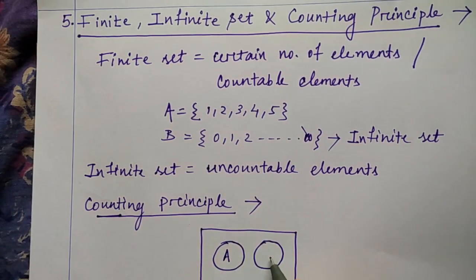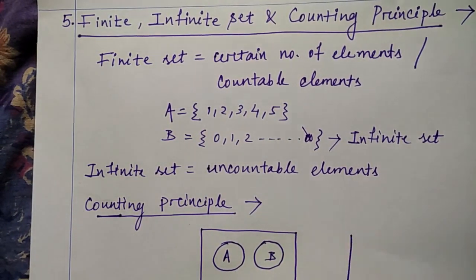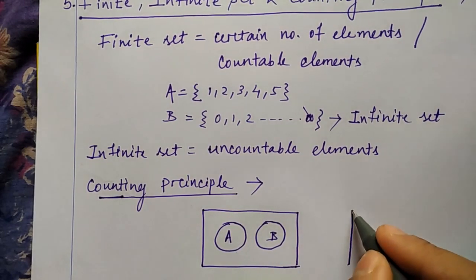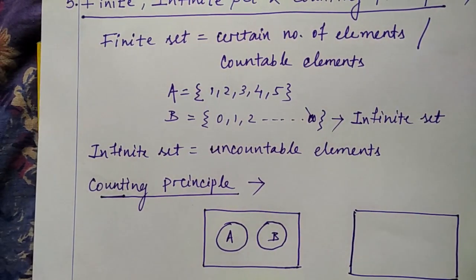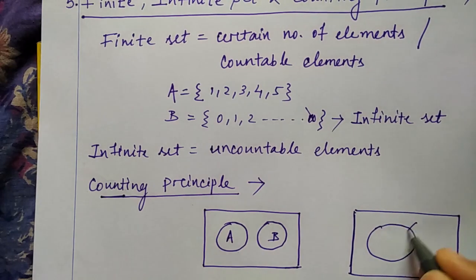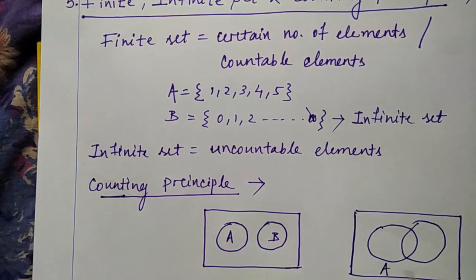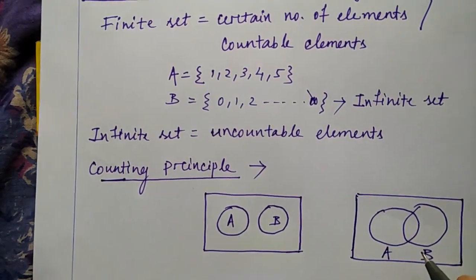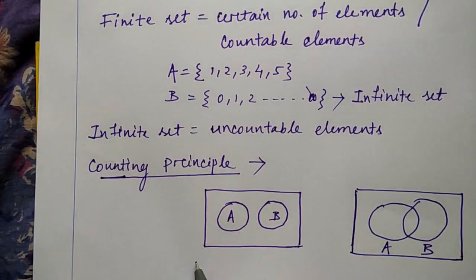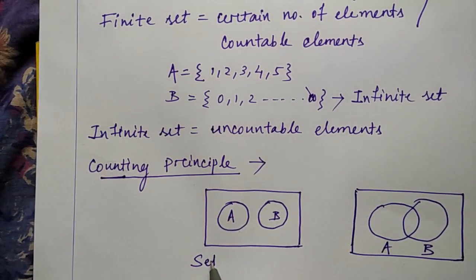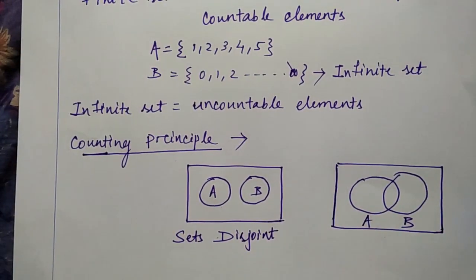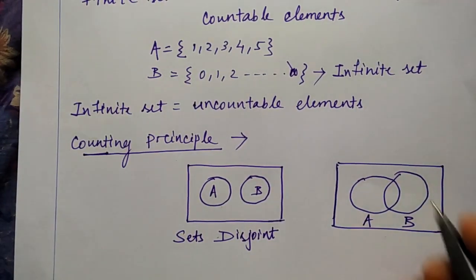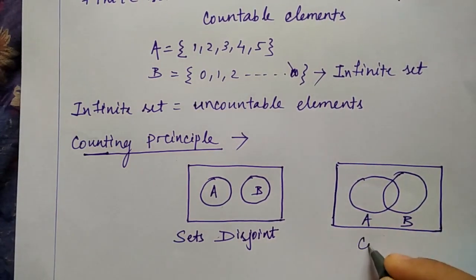Using the Venn diagram, I'll draw two diagrams — one with sets A and B disjoint, and another where A and B overlap. What you can see is the difference: in the first diagram the sets are disjoint, but in the second diagram the sets are not disjoint, meaning they have some common elements.